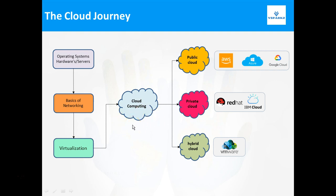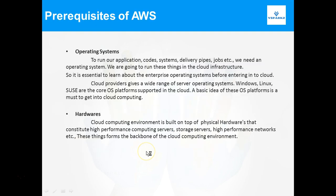Cloud computing is fundamentally divided into three types: public cloud, private cloud, and hybrid cloud. Out of which, AWS falls into public cloud. Similar to AWS, you have Azure and Google Cloud as well. So now we are going to discuss the prerequisites one by one.